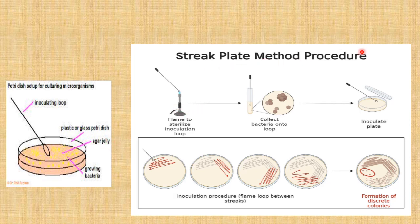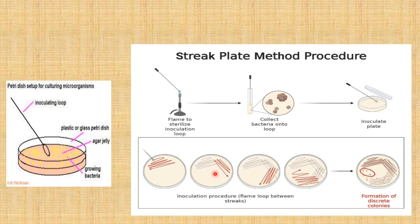Looking at the streak plate method procedure: you pick the inoculating loop and sterilize it using a flame. Once it is cool, you dip it inside the material that contains the bacteria, then streak it over the agar within the petri dish. As demonstrated here, you streak it all over the petri dish. You do this quickly because you do not want microorganisms from the air to grow inside the petri dish — you only want to grow the microorganisms from your sample. You also sterilize the agar gel itself to avoid contamination by microorganisms in the air.